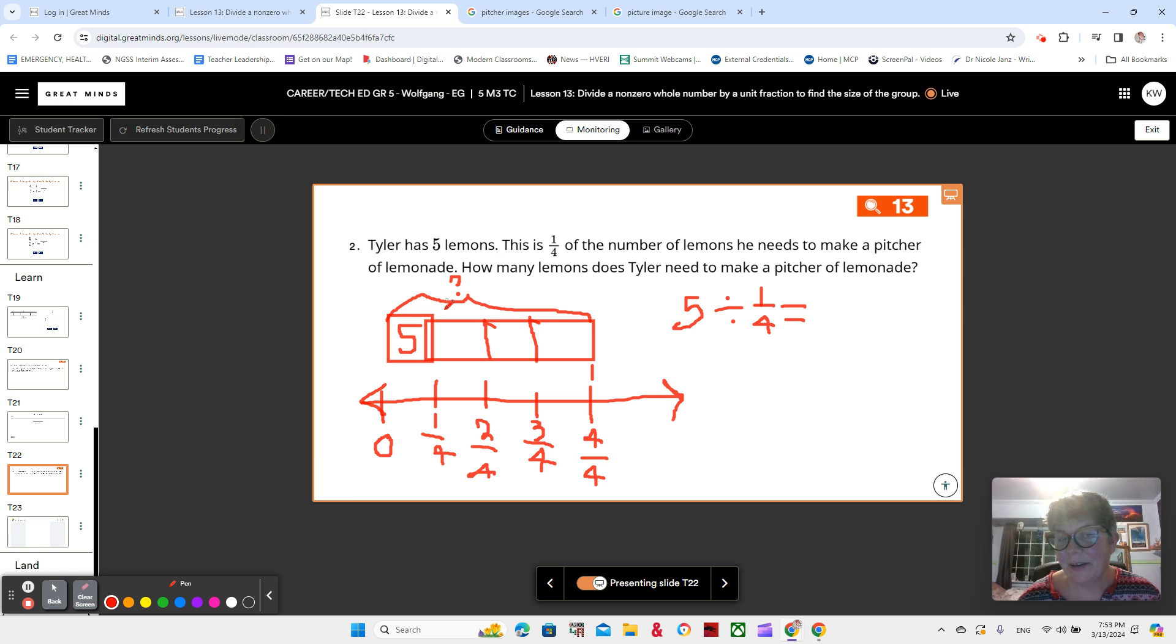And we know that a tape diagram is going to have the same numbers in all of its boxes, right? That's a tape diagram rule. So that means five, 10, 15, 20. Five is one fourth of 20. And how many lemons does he need?